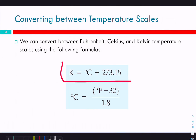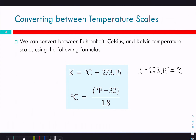The conversion you need to memorize is: Kelvin = °C + 273.15. To reverse it: °C = K − 273.15. For example, if we have 358 Kelvin, 358 minus 273.15 gives us 84.85 degrees Celsius. You don't need to consider sig figs here because it's an exact conversion.